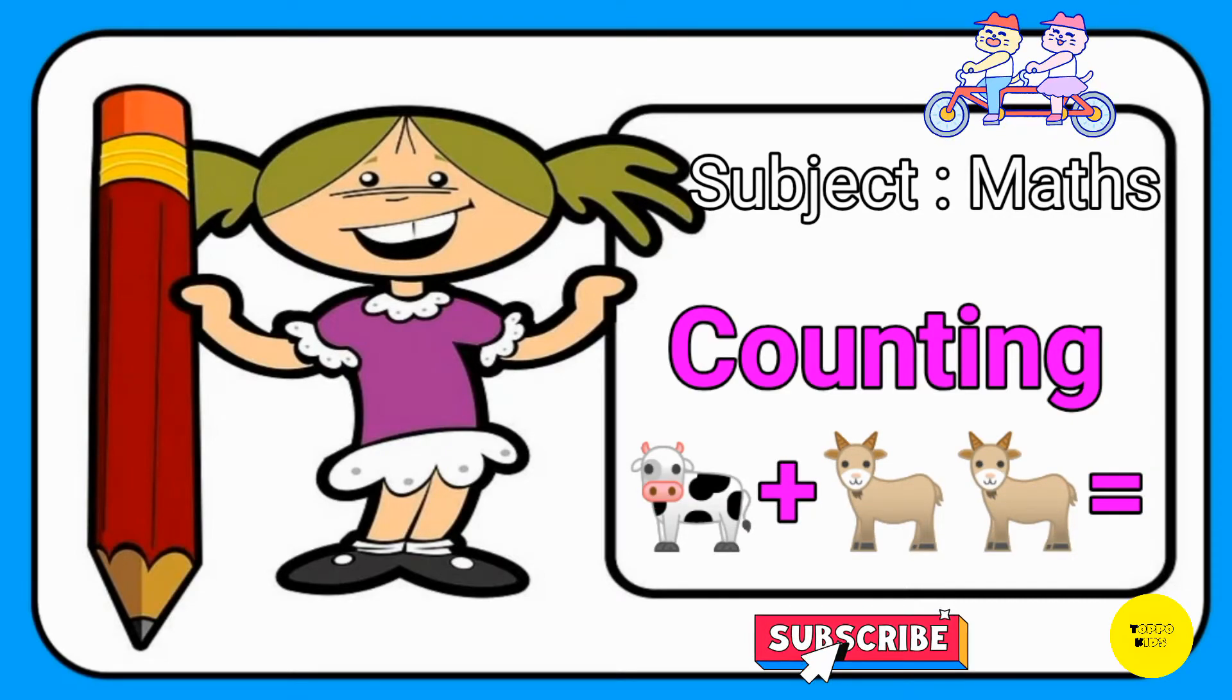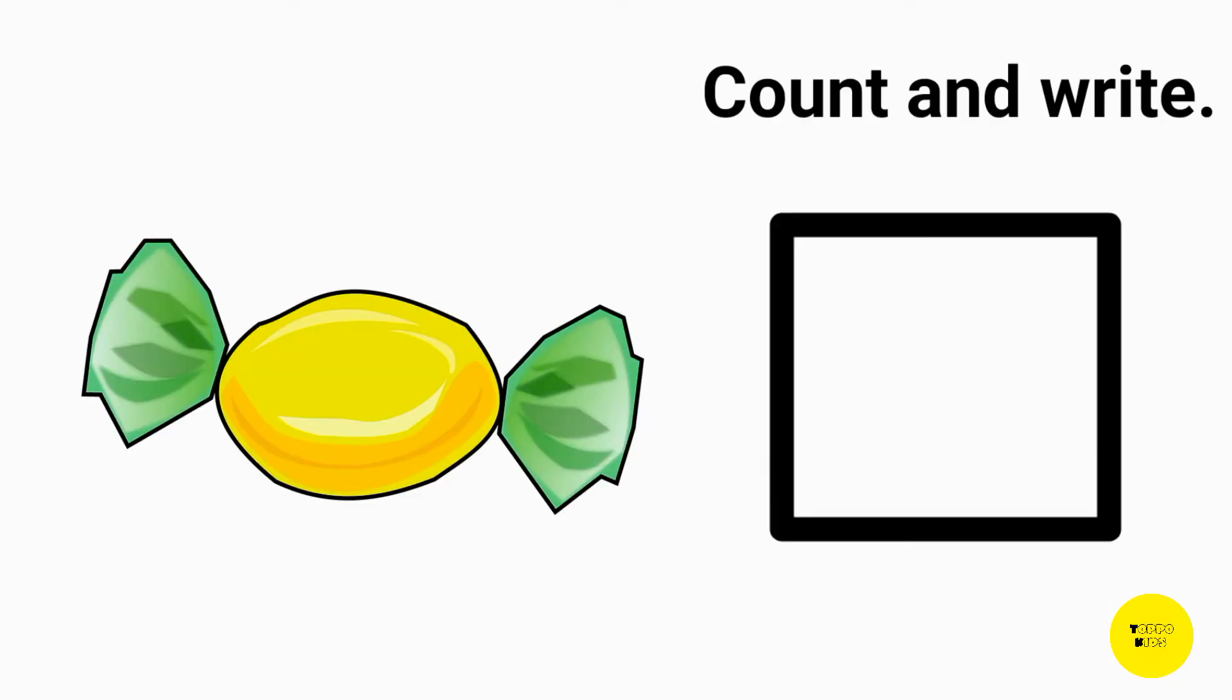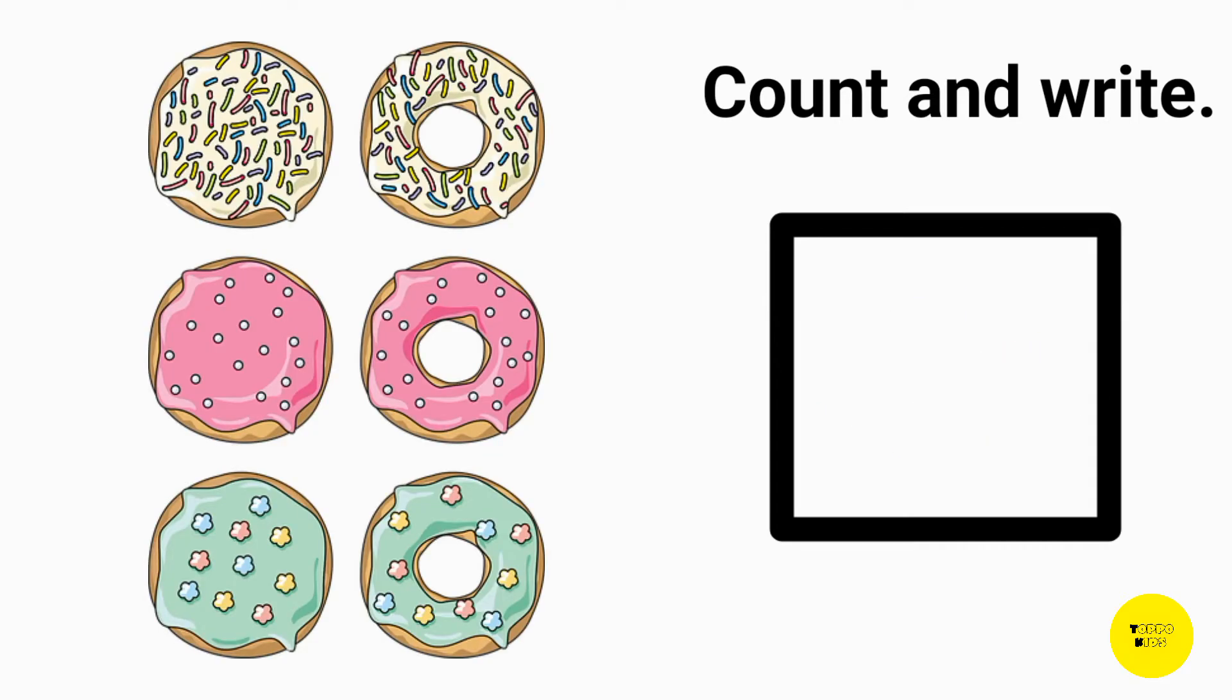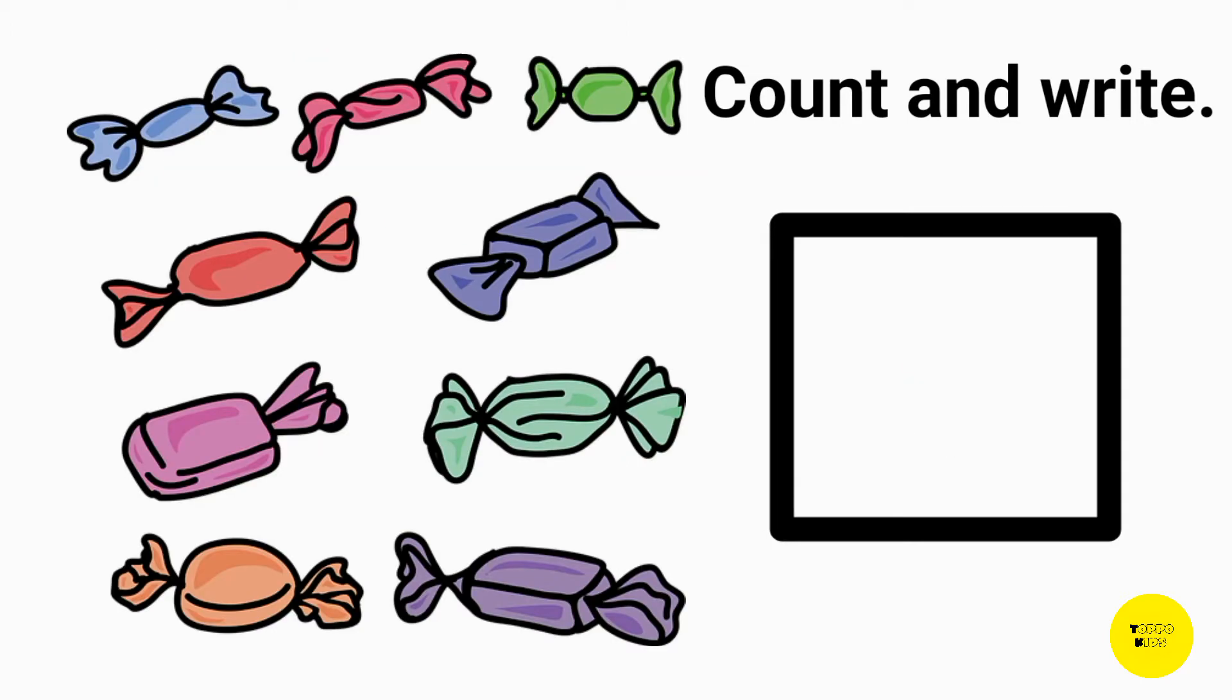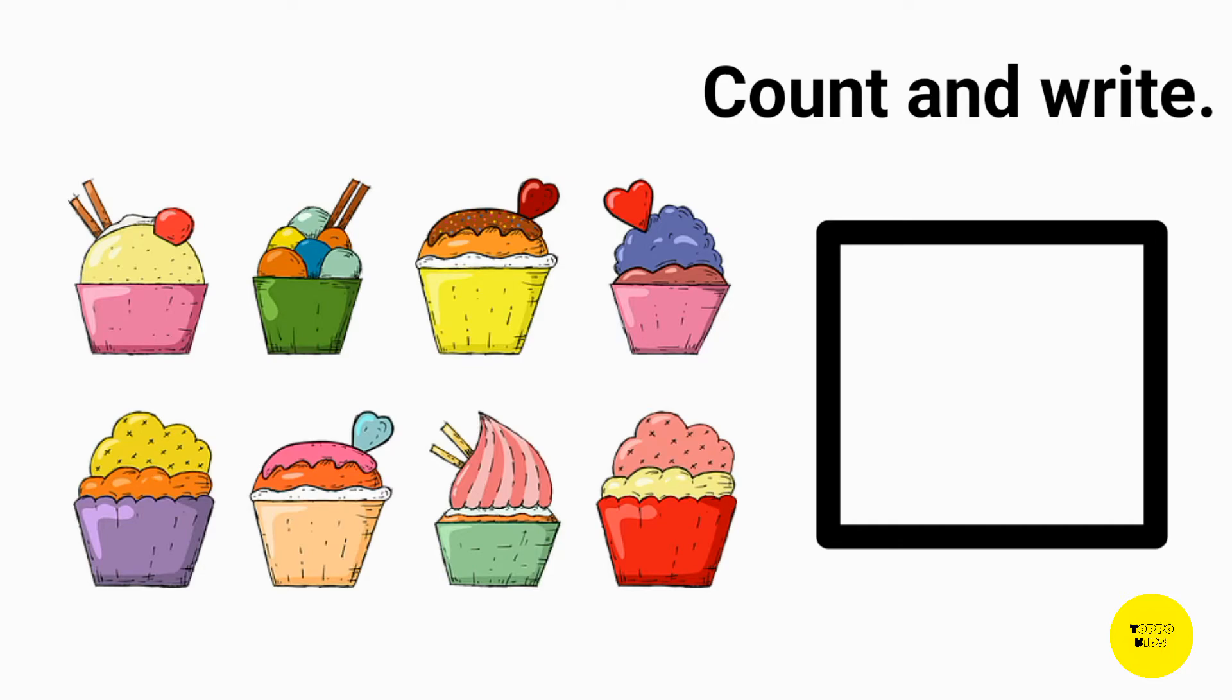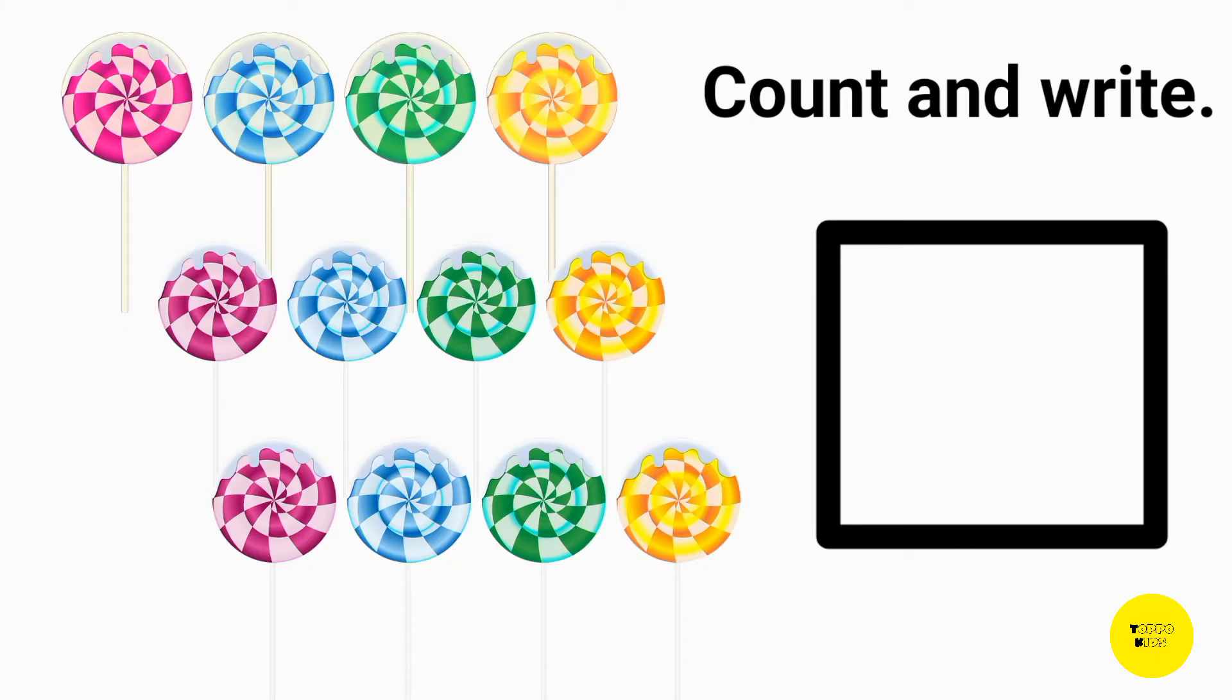Our next chapter is about counting. Count the object and guess the right answer. The correct answer is 1. The correct answer is 6. The correct answer is 3. The correct answer is 9. The correct answer is 8. The correct answer is 12.